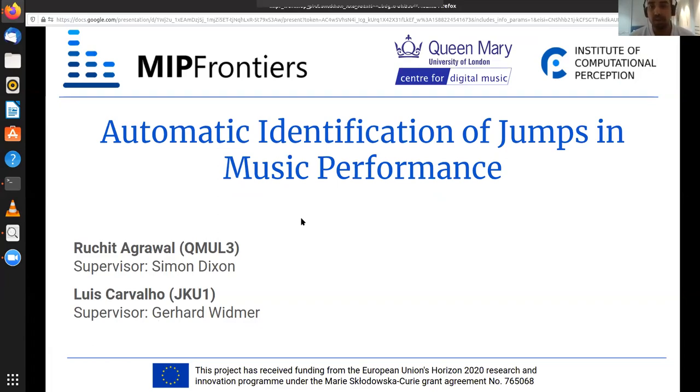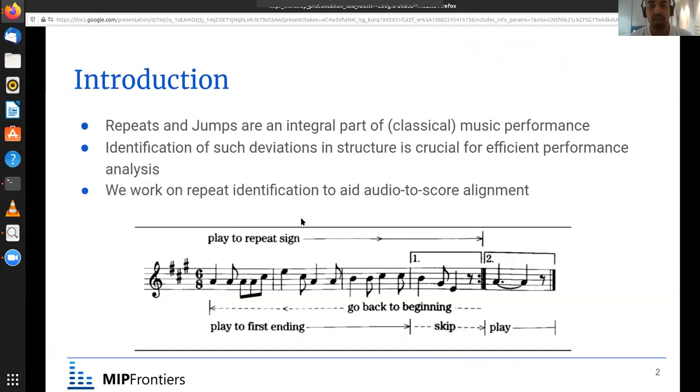First of all, why is this an important problem to solve? As we all probably know, repeats and jumps are an integral part of classical music performance, and identifying such deviations from the structure is crucial for efficient analysis of the performances. Now, in this collaboration we focus on the task of audio to score alignment, but this method could also be extended to other applications like cross-modal retrieval or music editing.